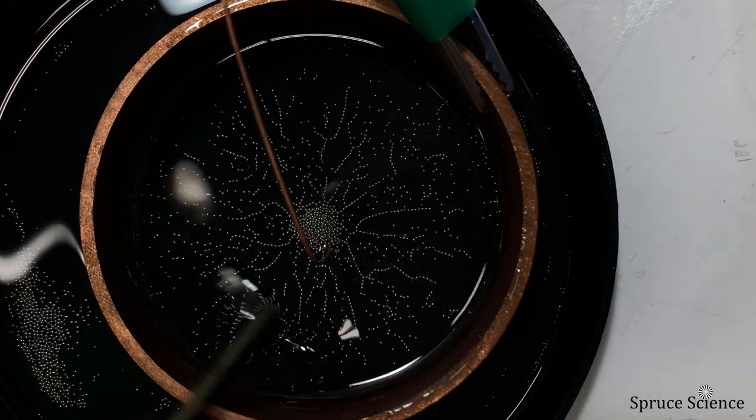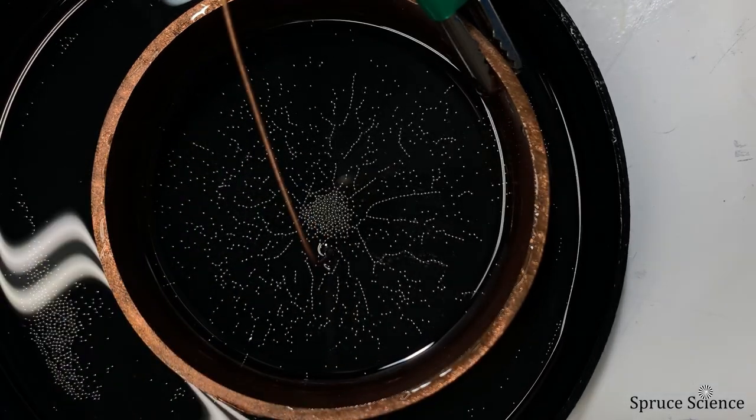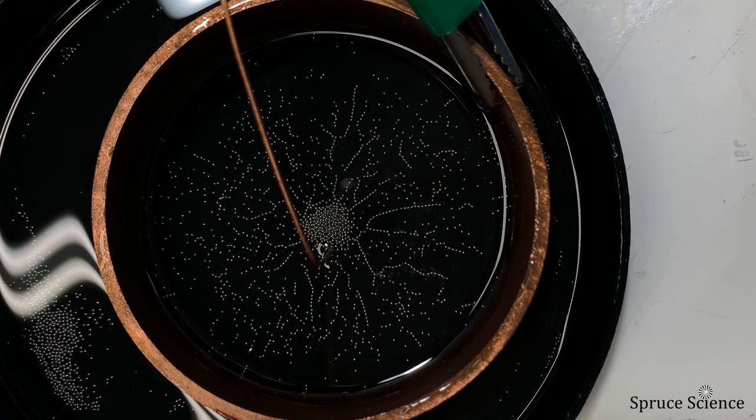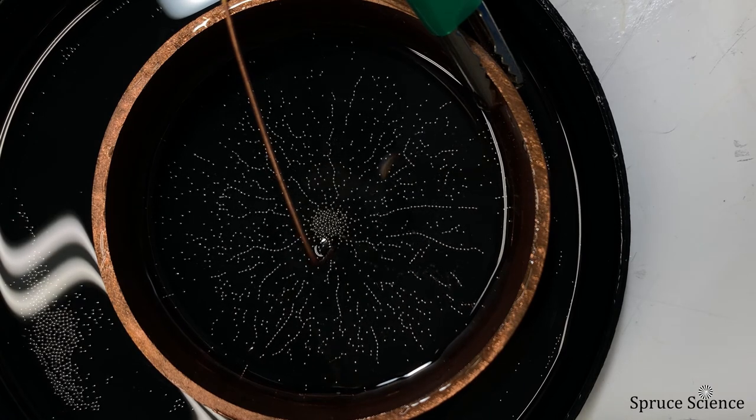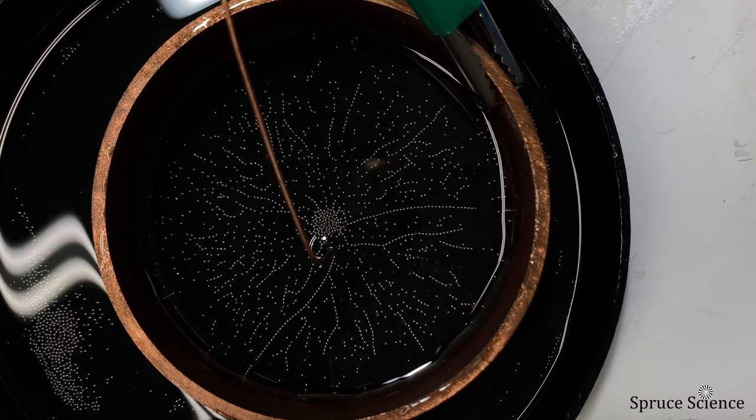We then use a stick to break up the branches. Doing so increases the resistance and that gives the network another chance to self-assemble and form a network.